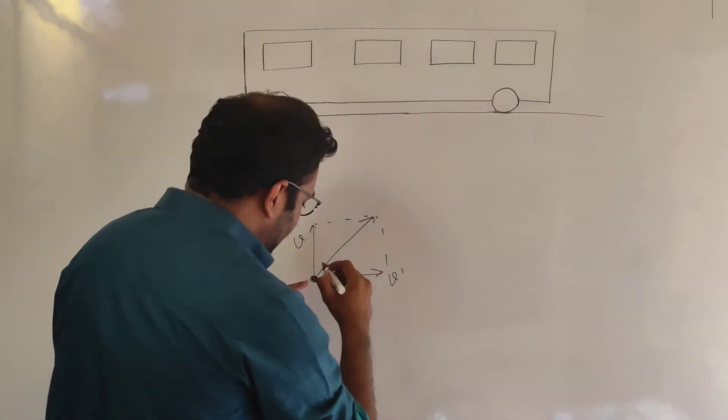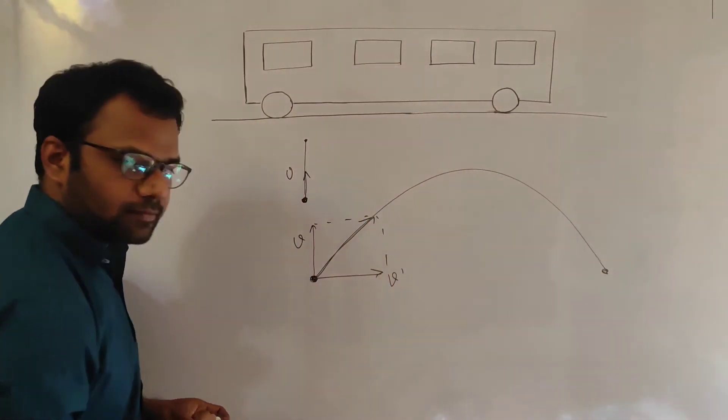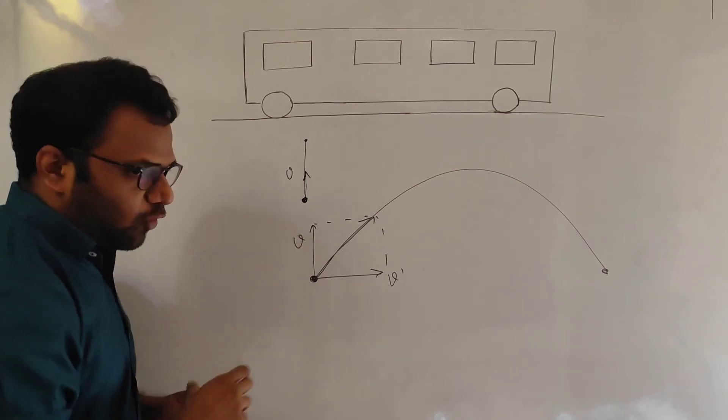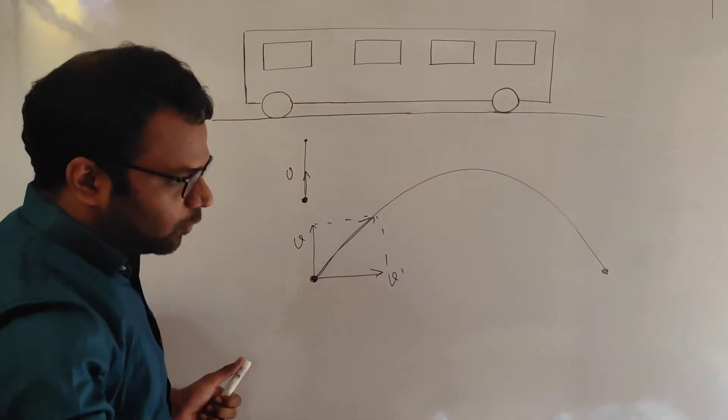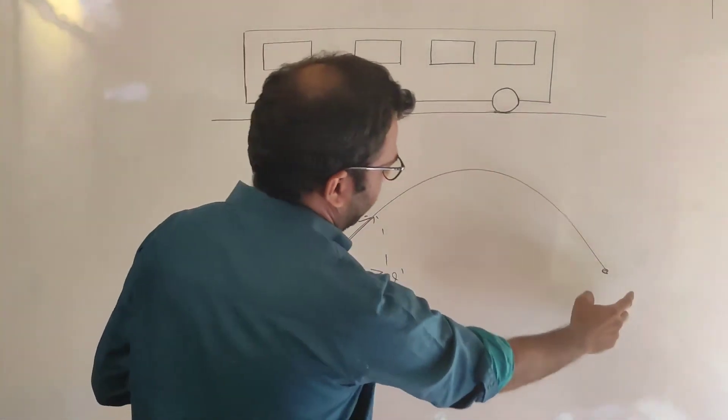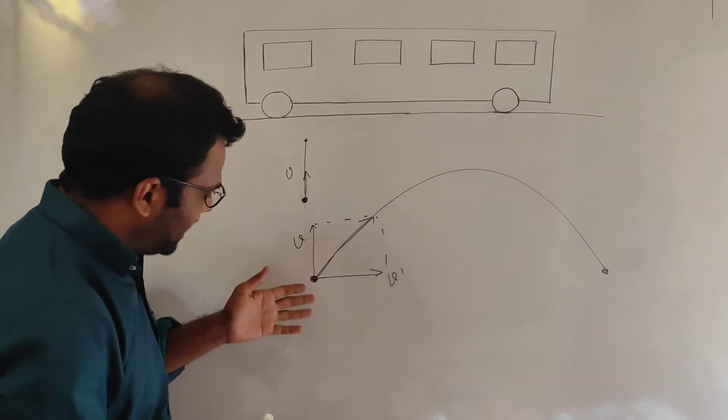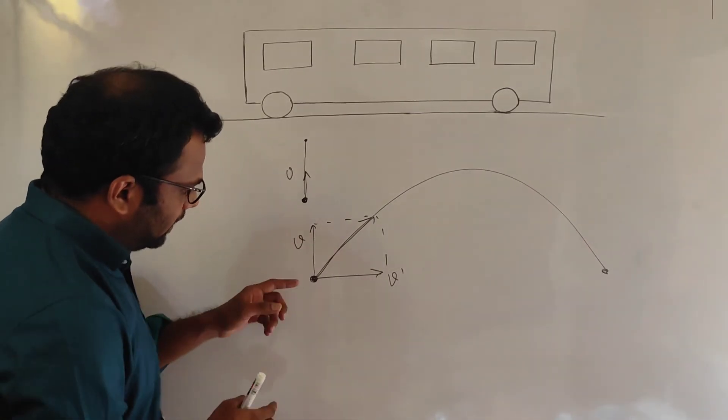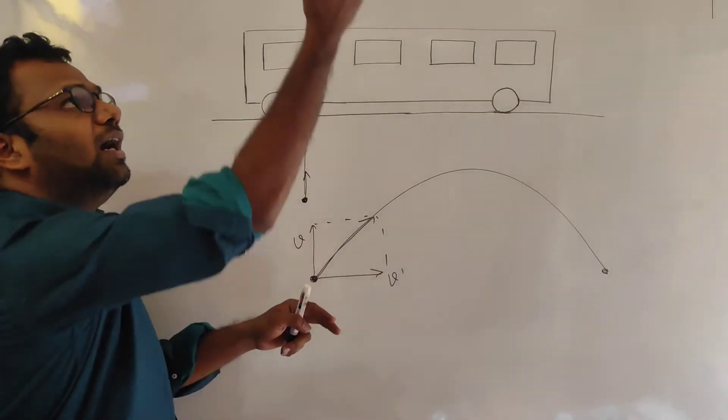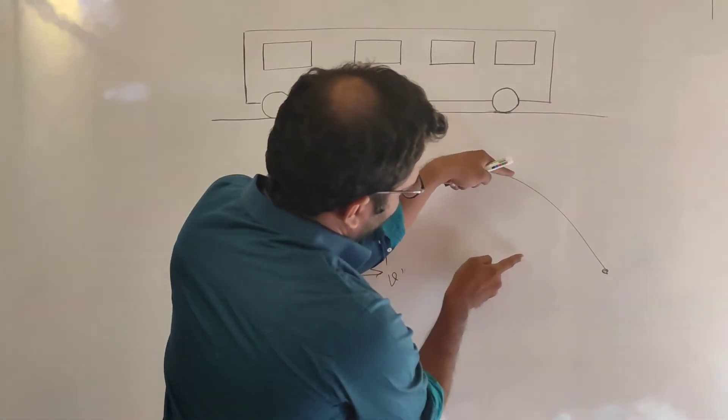The ball will now perform a trajectory, a projectile motion like this. So for a person who is on ground, if suppose he's somehow able to see the ball, the ball has performed this projectile motion. But for the person inside who has thrown this ball, the ball will always remain above his head like this and come back on his hands.